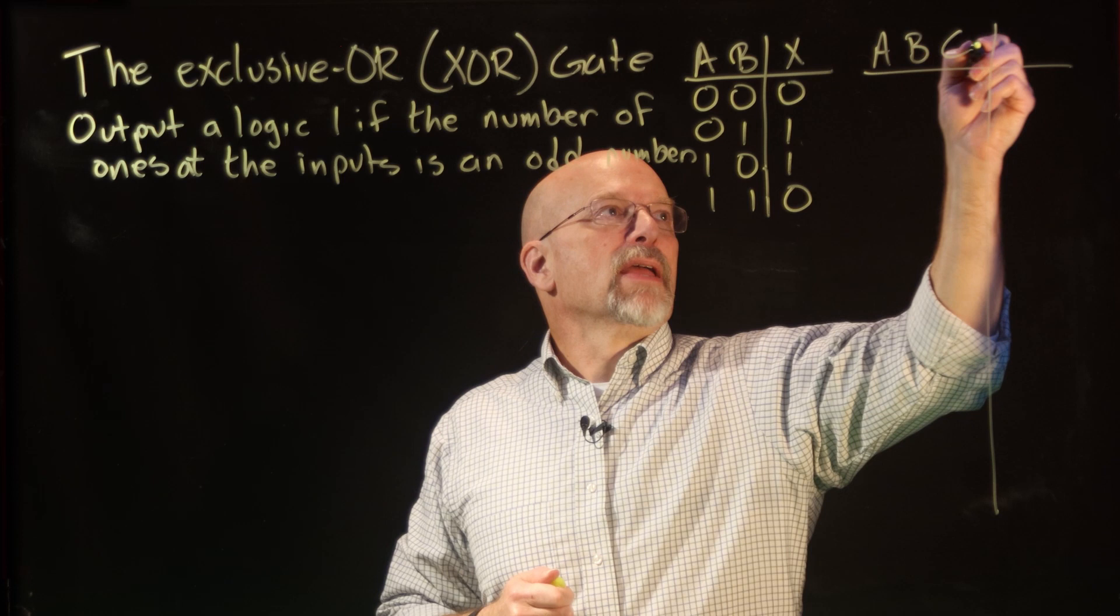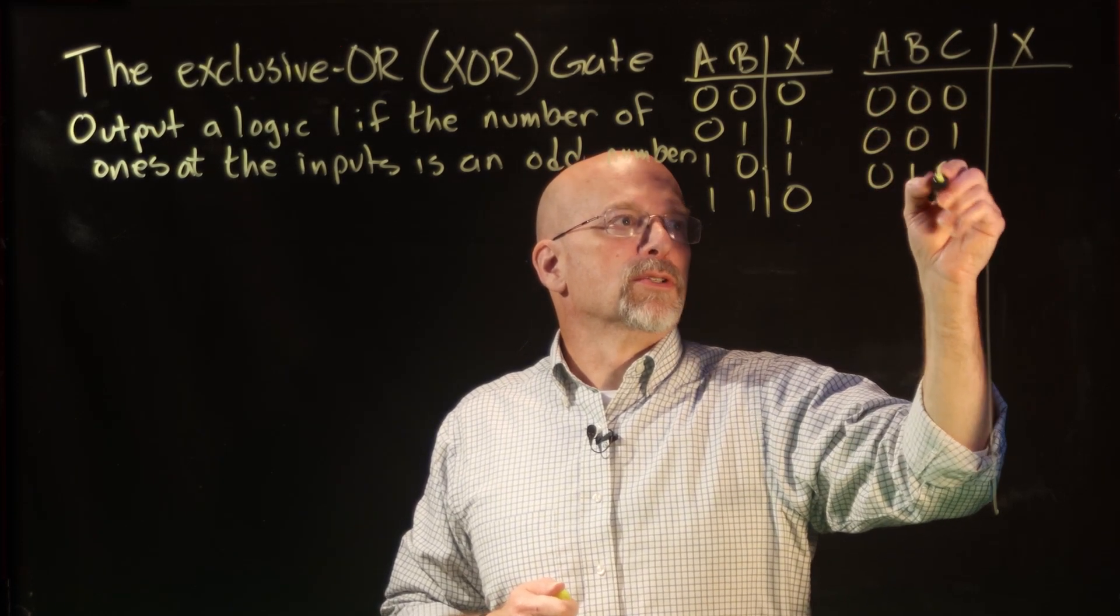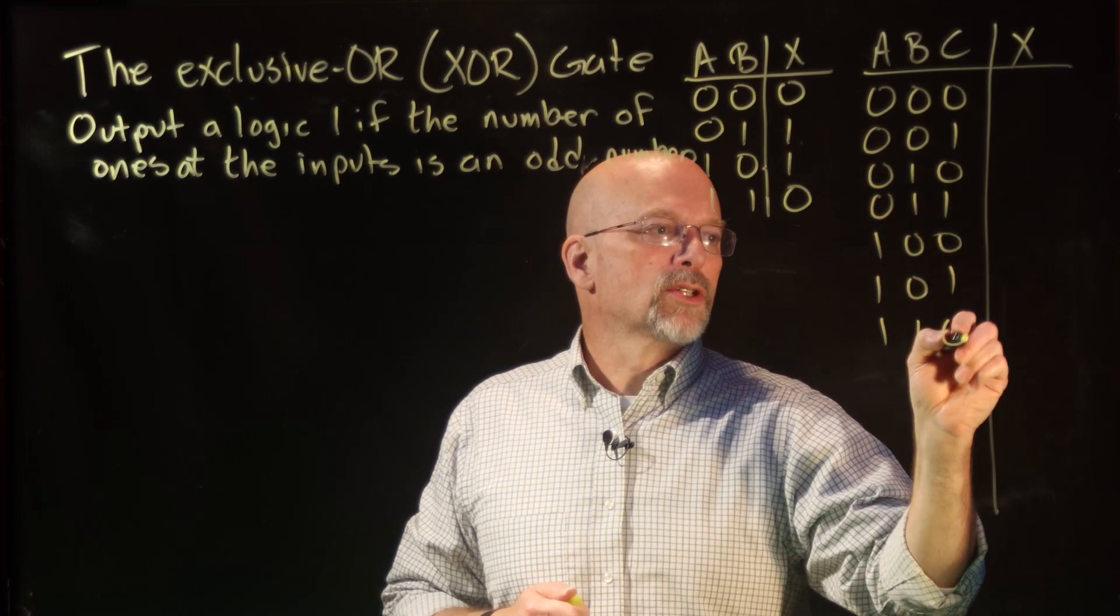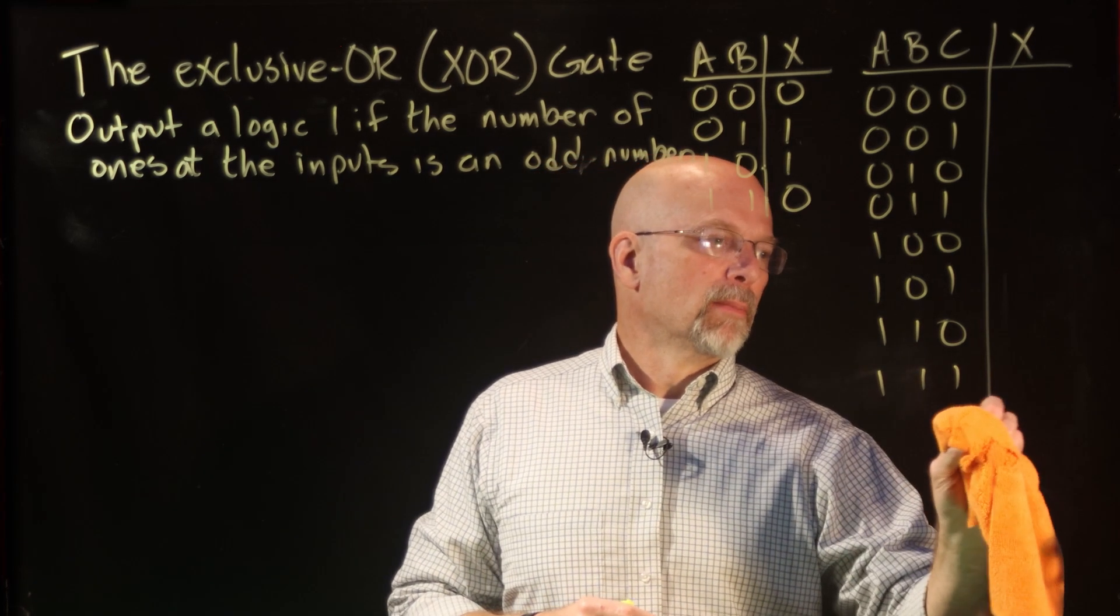Let's see what happens when we move to three inputs. So I have A, B, and C, and then I have X. So 0,0,0; 0,0,1; 0,1,0; 0,1,1; 1,0,0; 1,0,1; 1,1,0; 1,1,1. All right, so there's all my rows in my truth table.